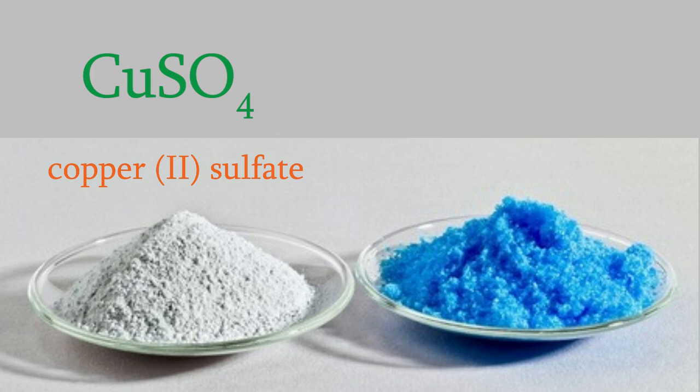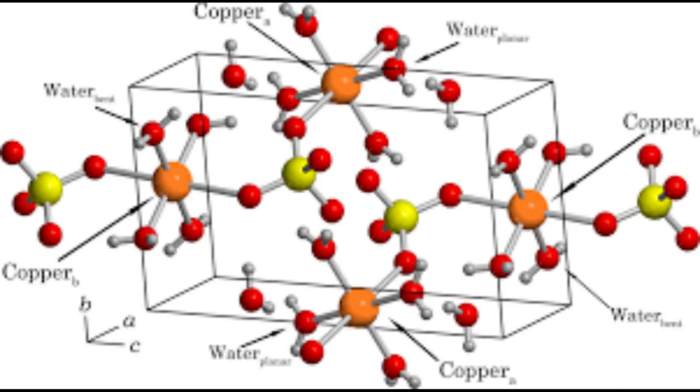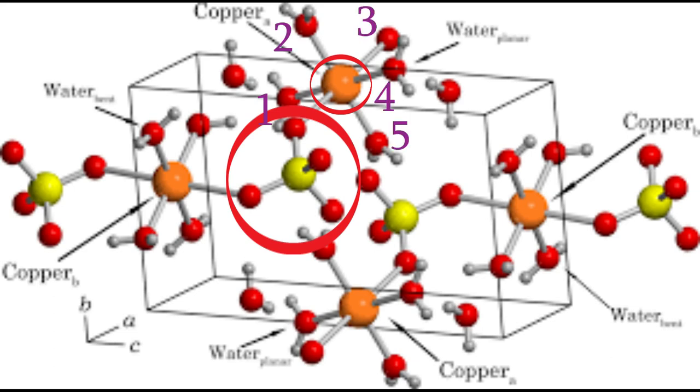Each molecule of copper sulfate in this compound has five water molecules attached to it. Compounds like that, which have water molecules attached to them, are called hydrates. Here's a picture of the crystal structure of this compound. This picture shows several molecules, so it can be a bit confusing to look at. But the important thing to notice is that here is a sulfate, and here is a copper. Notice that the copper also has five water molecules attached to it. These other water molecules are attached to different copper atoms that are outside the frame of the picture.